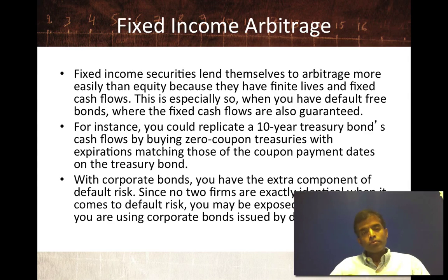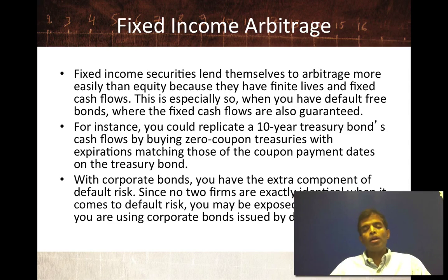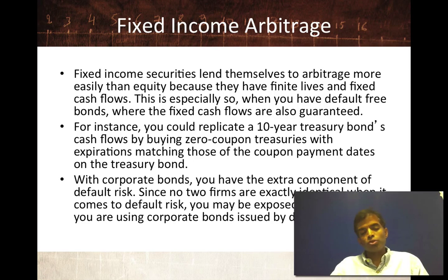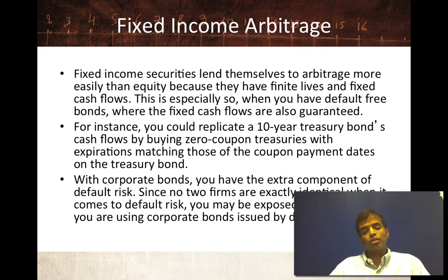Finally, fixed income arbitrage. Fixed income securities lend themselves much more easily to arbitrage than equities because they have a finite maturity — you have a set of cash flows and you know when they end. If you find a mispriced bond, you know there's going to be a date of reckoning — the maturity date — where the mispricing has to disappear. So if you have a 10-year bond, it's a collection of 10 sets of cash flows and a face value at the end of the 10th year. You could replicate that 10-year coupon bond by buying a 1-year bond, a 2-year zero coupon bond, a 3-year zero coupon bond — in other words, by buying zero coupon treasuries with expirations matching those coupon dates. Because you can replicate those two positions, they have to cost the same, and if they don't, you might be able to lock in that difference and have no cash flows or risk in the future. That's the definition of arbitrage. That's with T-bonds where you don't have default risk.